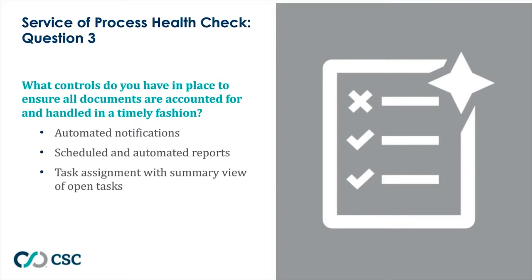Once you have the notification, you want to make sure documents are routed automatically to the people who need to take action, and that those people have access to the documents. Once documents are being handled by different people in your legal team or organization, do you still have line of sight? Can you tell who has control of a specific document, who is taking action, and whether that action has been taken in a timely manner? Having accountability features like acknowledgment of receipt provides a record of who has taken responsibility.